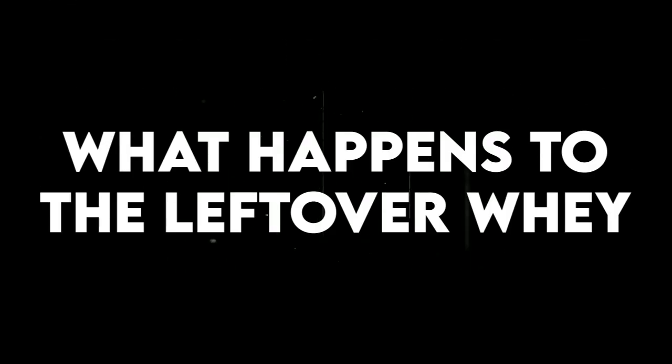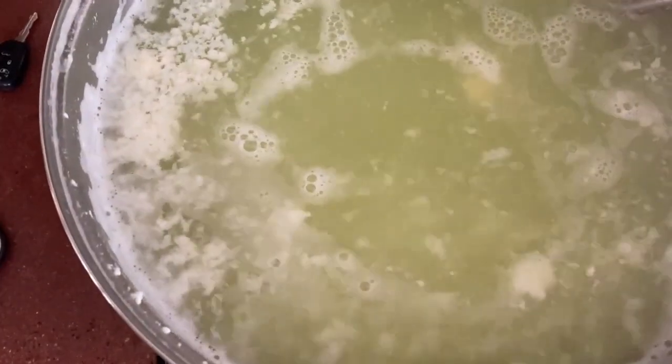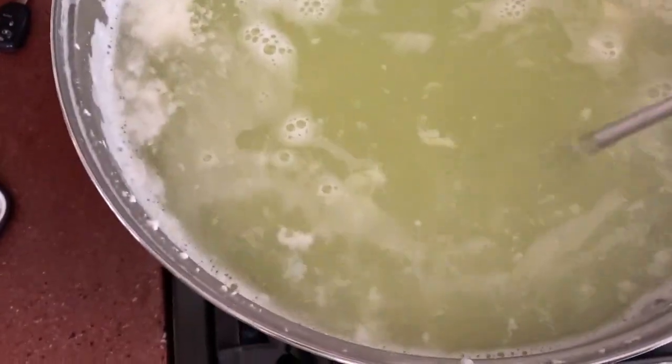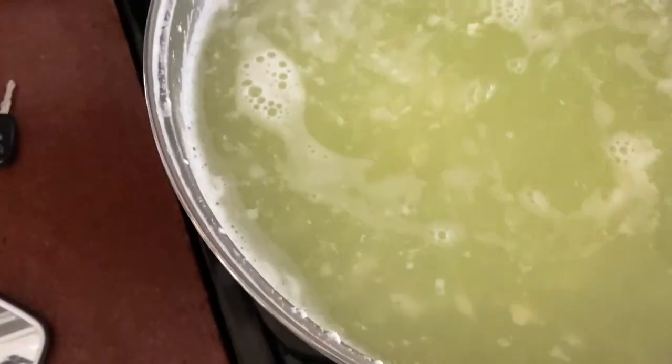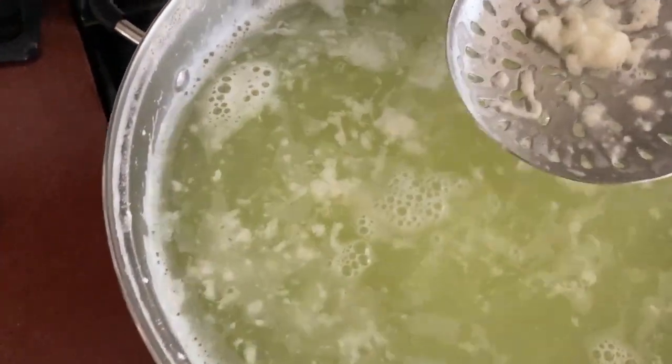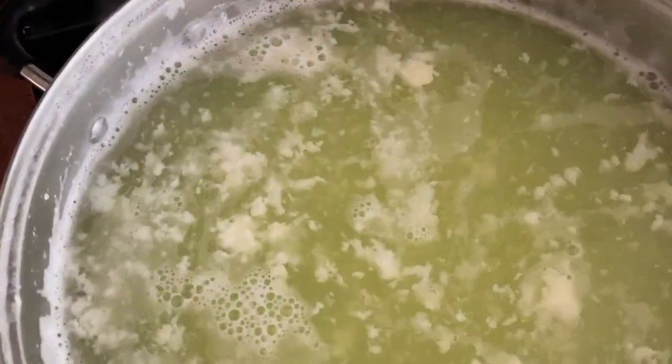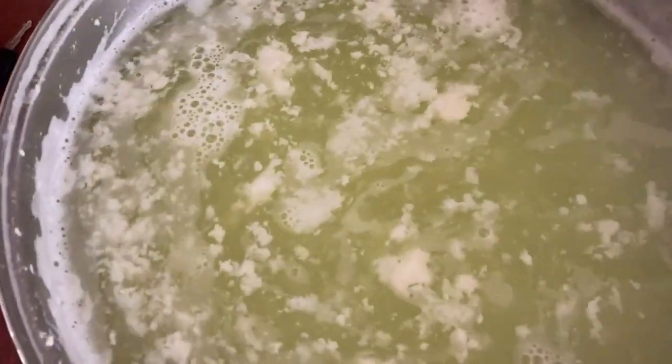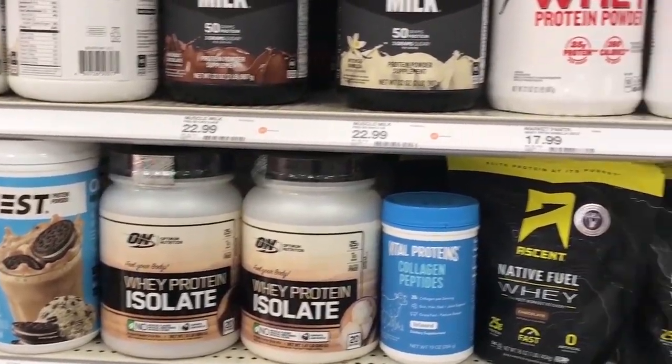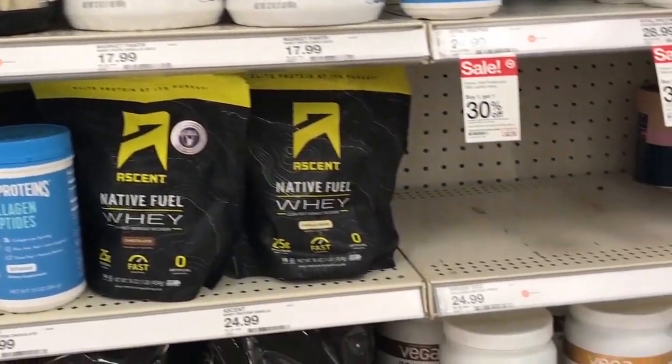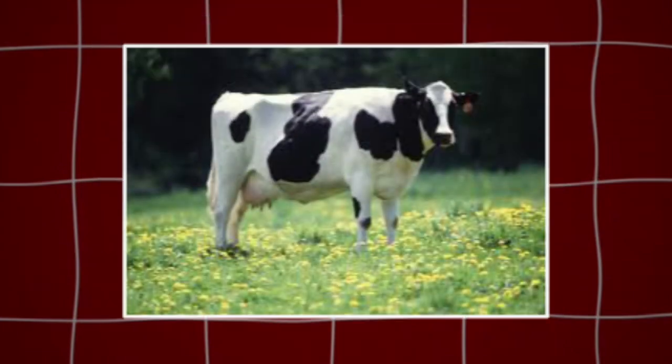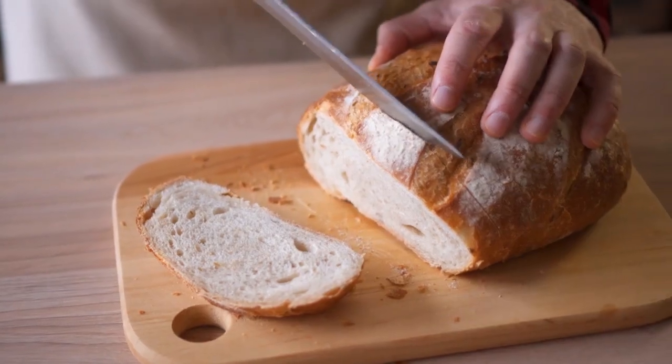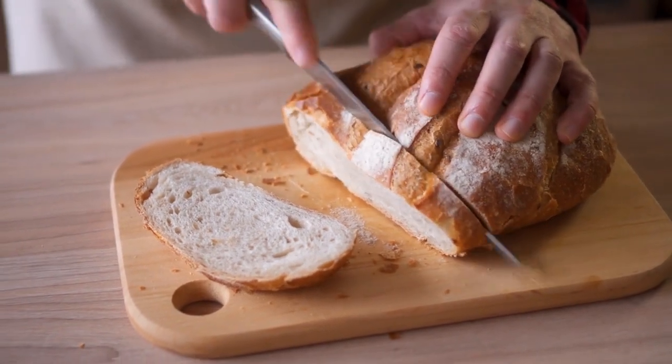What happens to the leftover whey? As promised, let's talk more about whey, the liquid leftover after the curds form. It's packed with nutrients and cheese factories don't just throw it away. Instead, whey is used in many smart ways. It can be heated again and turned into ricotta cheese. It's also made into whey protein, which is popular in health and fitness drinks. Farmers use it as animal feed for pigs, cows, and others. Whey even helps make bread and other baked goods.